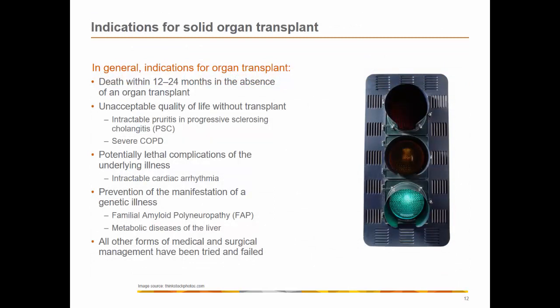Major indications for solid organ transplants in general include: death expected within 12 to 24 months in the absence of organ transplant; unacceptable quality of life without transplant — for example, intractable pruritus in progressive sclerosing cholangitis or progressive shortness of breath with severe COPD; potential lethal complications of underlying diseases such as intractable cardiac arrhythmias; prevention of manifestations of genetic illnesses such as familial amyloidosis or metabolic liver disease; and when all other forms of medical and surgical management have been tried and failed.